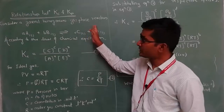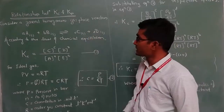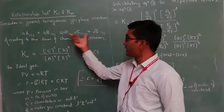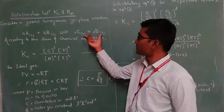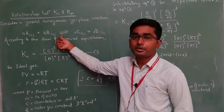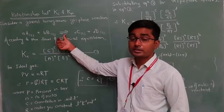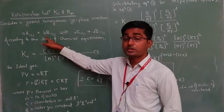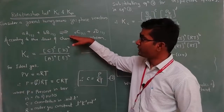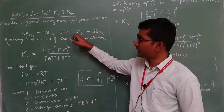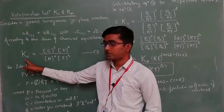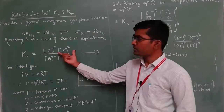Let us start. Consider this general homogeneous chemical reaction in the gas phase. Reactants A and B are in the gaseous state and they are converting into products C and D, which are also in the gaseous state. This reaction is in chemical equilibrium — the state at which the concentration of products and reactants is constant. Applying the law of chemical equilibrium to this reaction, we get the equilibrium constant Kc.